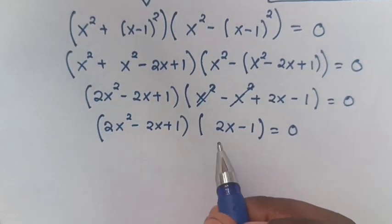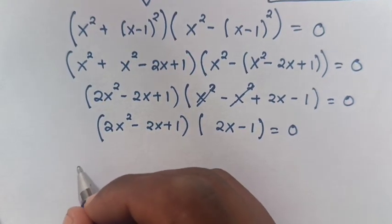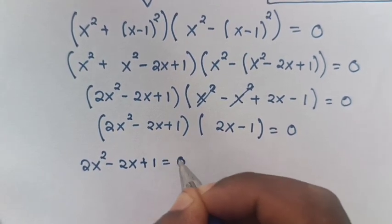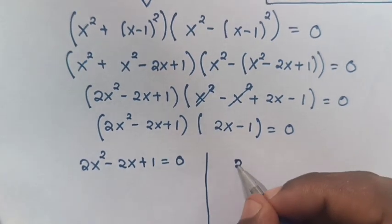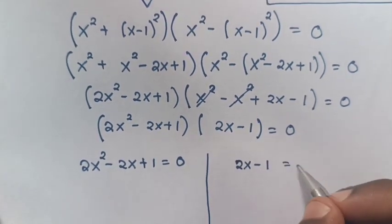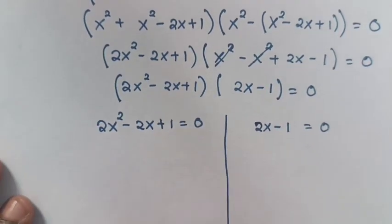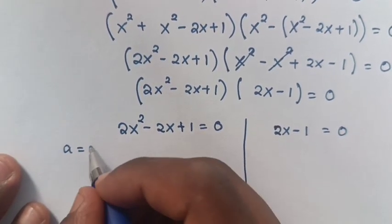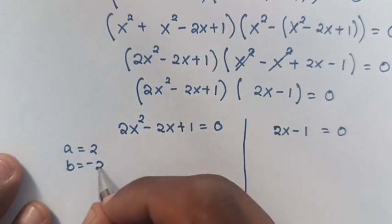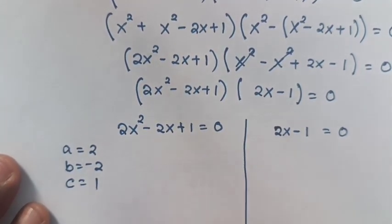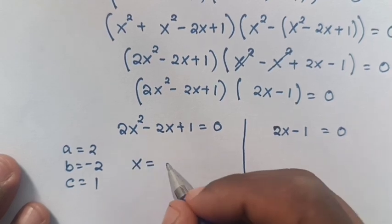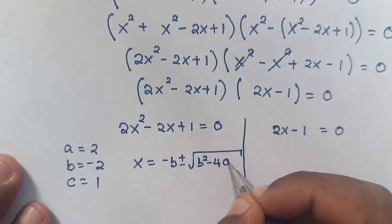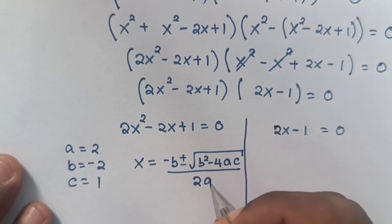So we have x squared minus 2x plus 1 bracket equals 0, and 2x minus 1 bracket equals 0. To solve this quadratic equation, a is 2, b is negative 2, and c is 1. From the quadratic formula, x equals negative b plus or minus square root of b squared minus 4ac, over 2a.